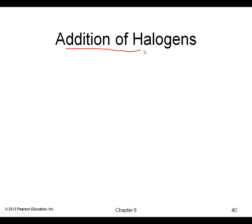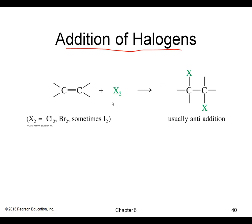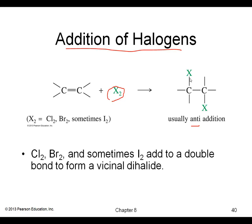The next reaction is the addition of halogens. We can add X2 — usually chlorine or bromine — and the two halogens add anti across the double bond, so we end up with trans products — anti addition.